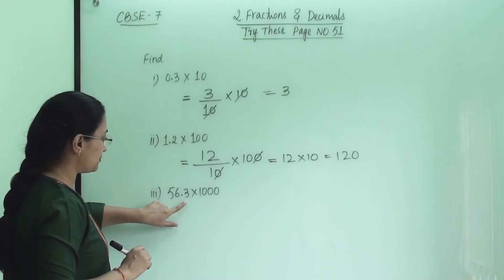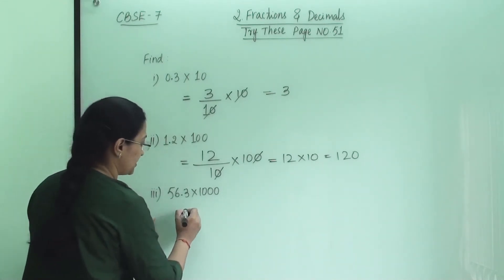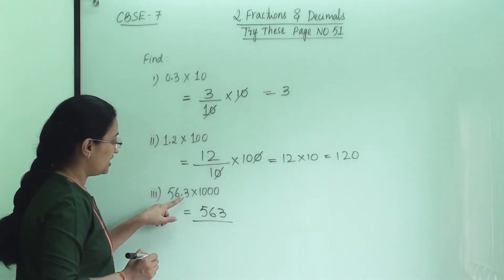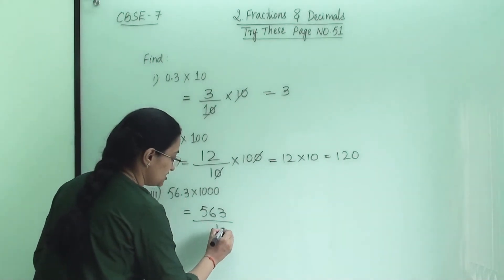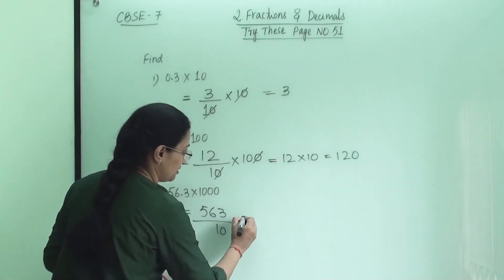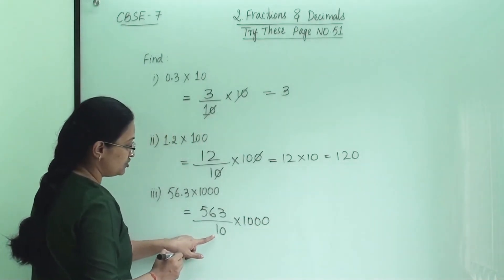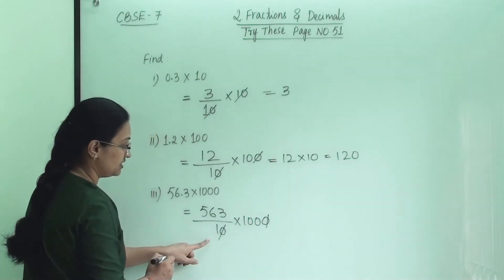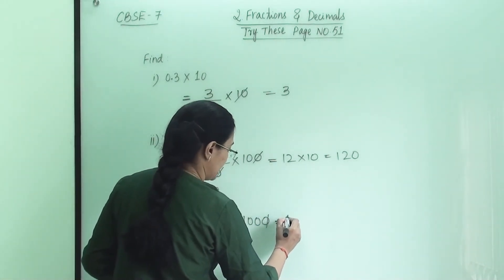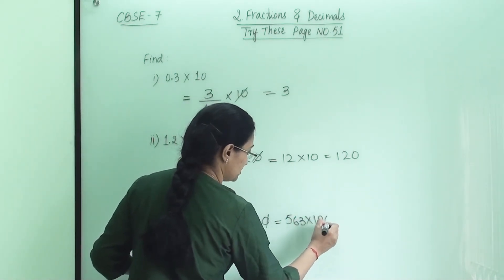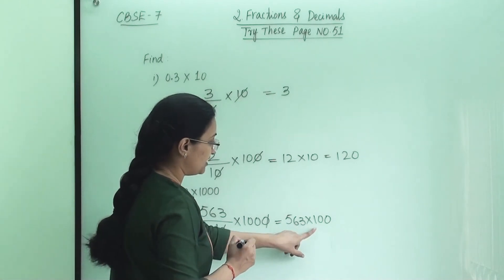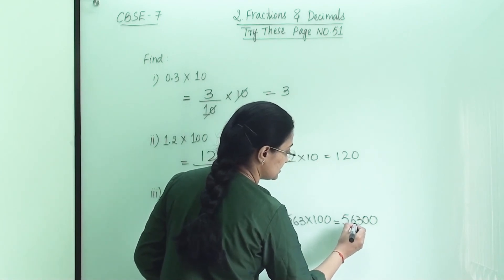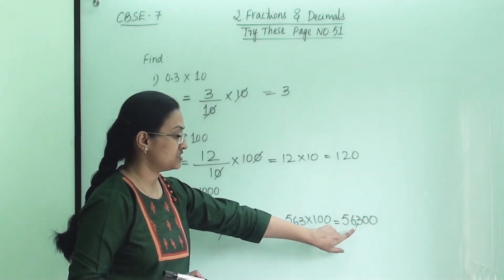Now 56.3 into 1000. For 56.3, we write 563, and since after the decimal there is one number, the denominator is 10. In multiplication, 1000 is there. We can cancel one zero from 10 and 1000, leaving 563 multiplied by 100. When we multiply, we get 563 followed by two zeros. So the answer is 56300.